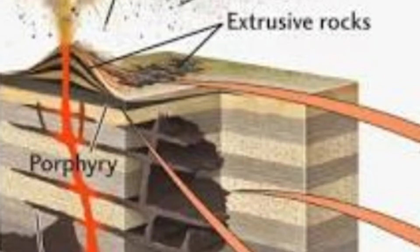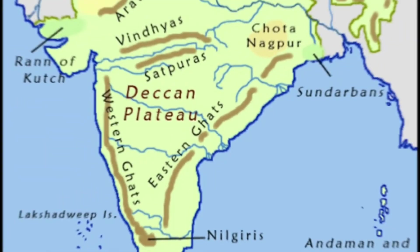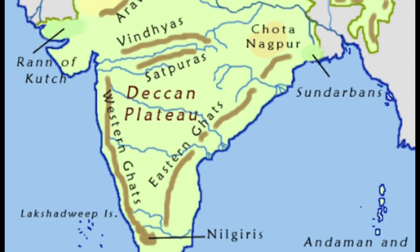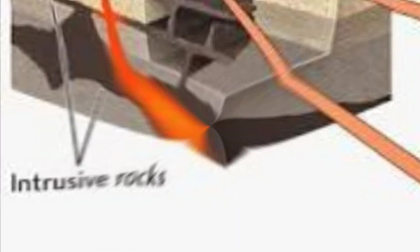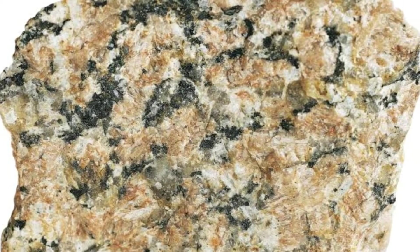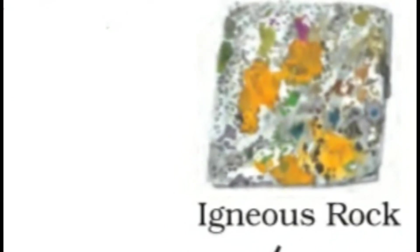Rocks formed from lava cooling on the surface are called extrusive igneous rocks and have a very fine grained structure. For example, the Deccan Plateau is made up of basalt rocks, situated between the Eastern and Western Ghats of India. The molten magma that cools down deep inside the Earth's crust forms solid rocks called intrusive igneous rocks, and granite is an example of it.